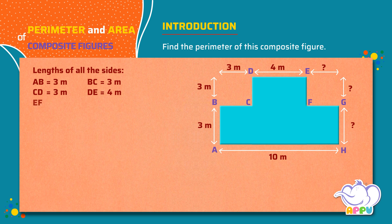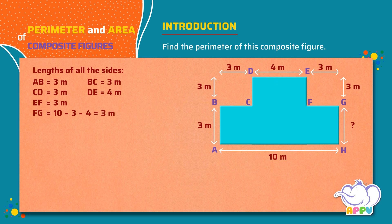EF equals 3 meters, FG equals 10 minus 3 minus 4, which equals 3 meters, GH equals 3 meters, and HA equals 10 meters.